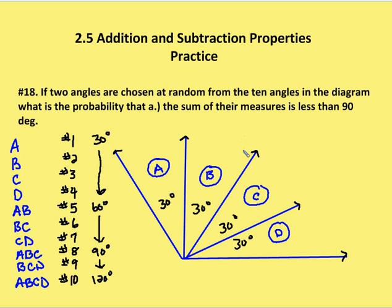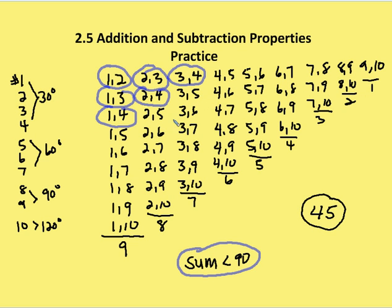So the question is: what's the probability that the sum of the measures is less than 90 degrees? I've written out all the possible combinations — angle 1 and 2, 1 and 3, 1 and 4, 1 and 5, and so on; 2 and 3, 2 and 4, 2 and 5, and so forth; 3 and 4, 3 and 5, 3 and 6, and so forth. There are 45 different possibilities.